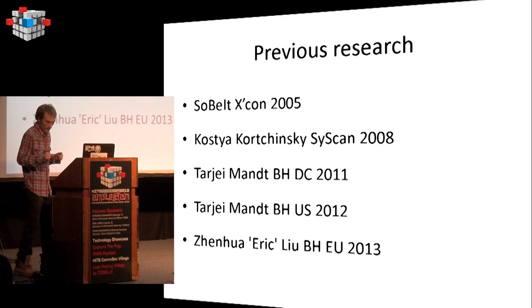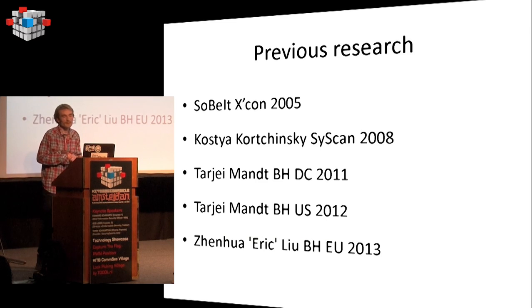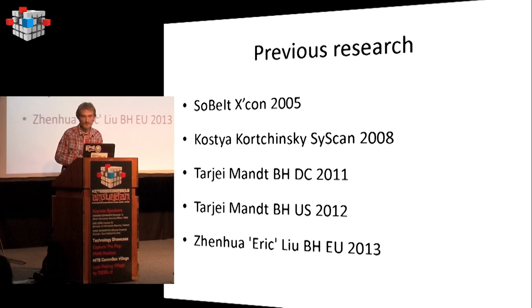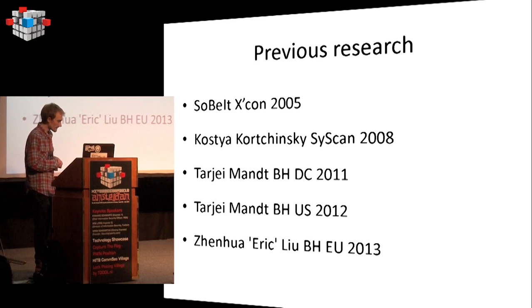Talking about previous research: the first notable work was from XCON conference in 2005, then a more comprehensive one at SyScan by Tarjei, and the newest one at Black Hat. Each research is focused on attacking the pool allocator itself. After Tarjei at Black Hat DC talked about cool attacks against the allocator on Windows 7, Microsoft security engineers read his slides and simply eliminated all his techniques. In 2012 he discovered just two more techniques.